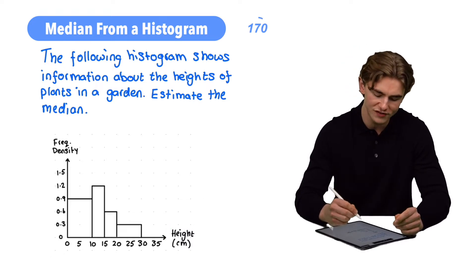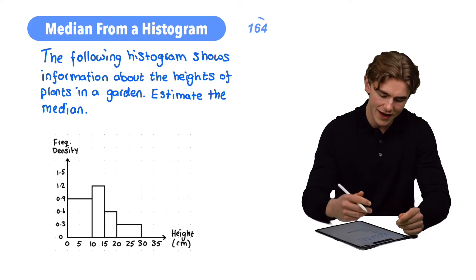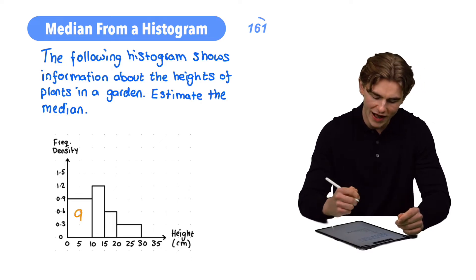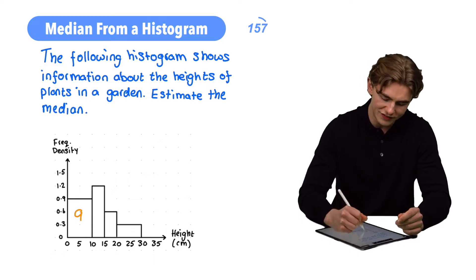First of all, calculating our total frequency, we're going to find the areas of all of our bars and add them together. We have a width of 10 and a height of 0.9, that's going to give us 9. We're going to have a width of 5 for the next one and a height of 1.2, 5 by 1.2, that's going to be 6.